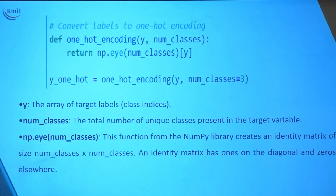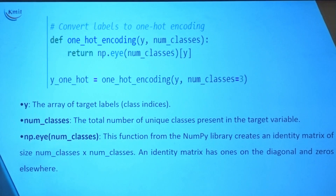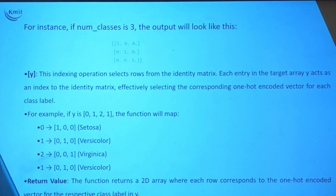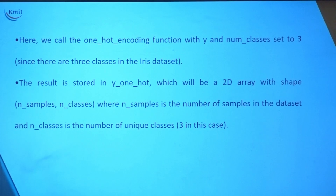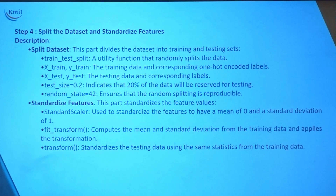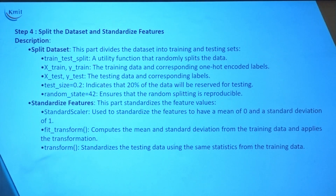We have one-hot encoded the data. We pass one-hot encoding of y with the number of classes. After splitting the data, if test size is 0.2, that implies 20 percent goes to testing and 80 percent to training.